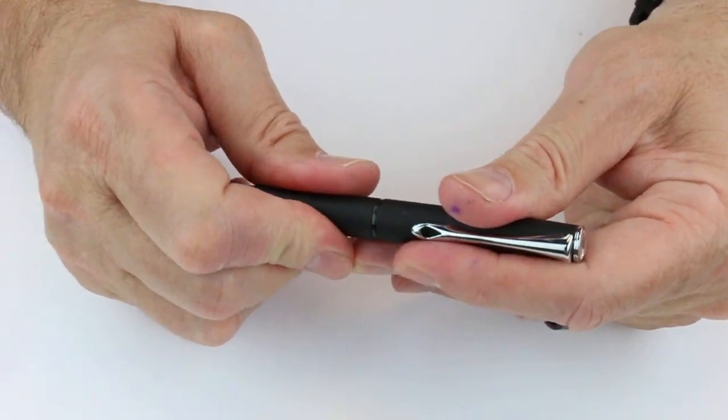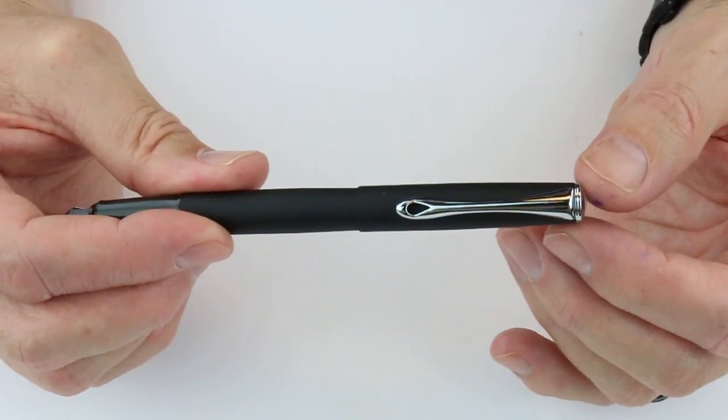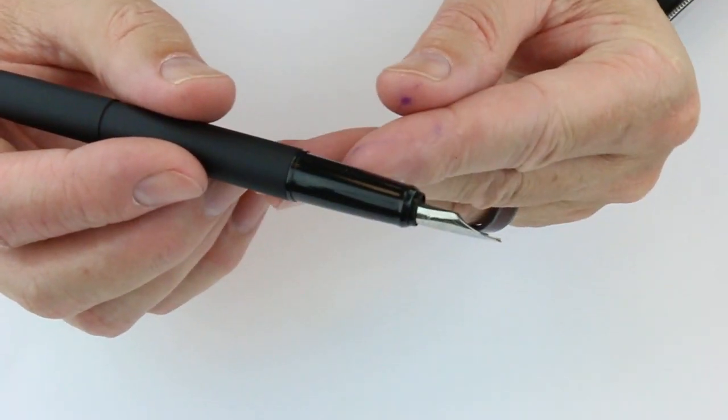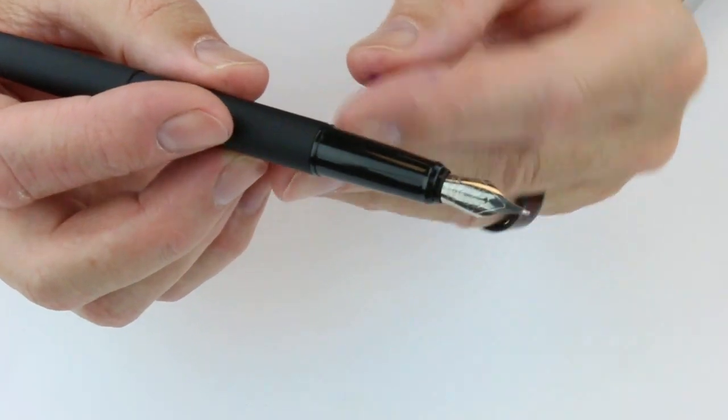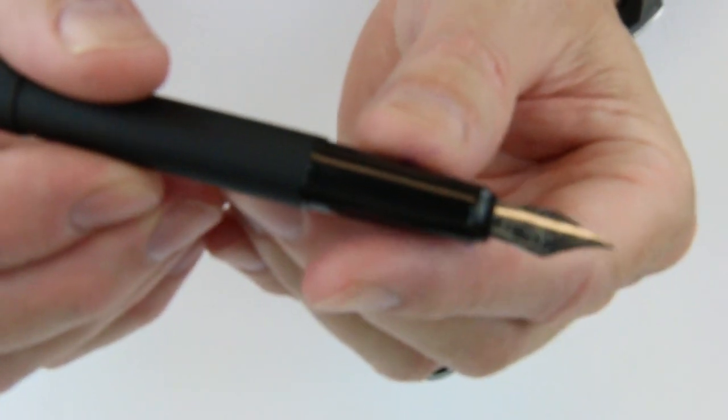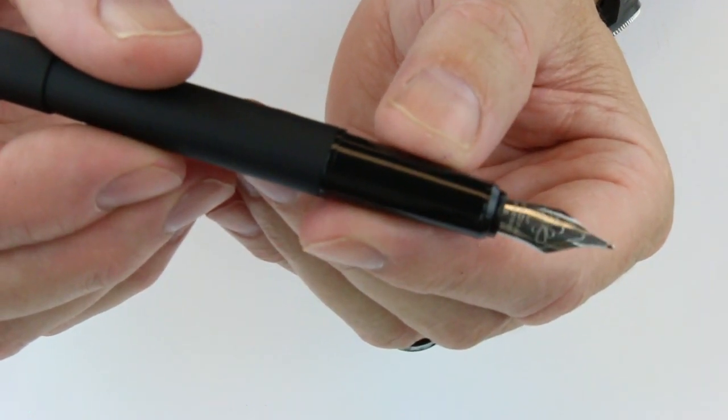The cap is a snap on-off cap so you just snap it off and it will actually snap on the end of the barrel as well to post. The section is made of resin with a glossy finish and a steel nib with a silver color. The Diplomat logo is engraved on it.